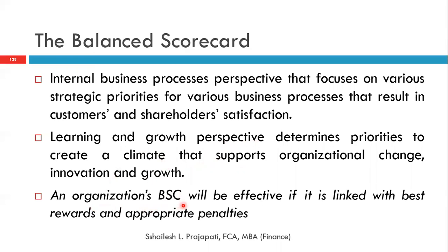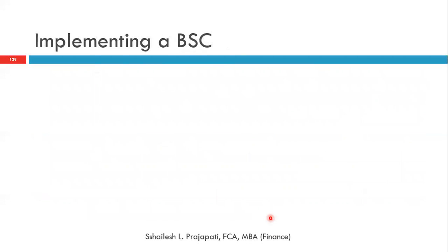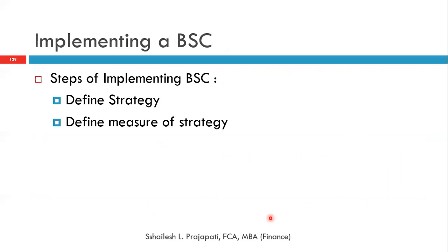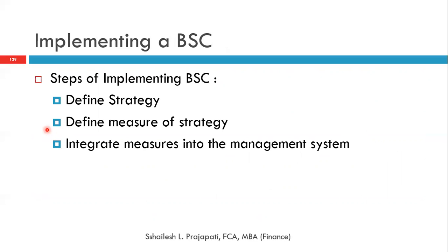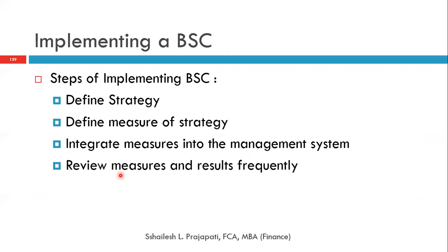An organization's Balanced Scorecard will be effective if it is linked with appropriate rewards and penalties. If there is only reward, it is not sufficient. If there is only penalties, it will hamper the motivational part of the organization. To implement the Balanced Scorecard, there are four steps: first, define the strategy; second, define the measurement of the strategy; third, integrate the measures into the management system; fourth, review measures and results frequently.